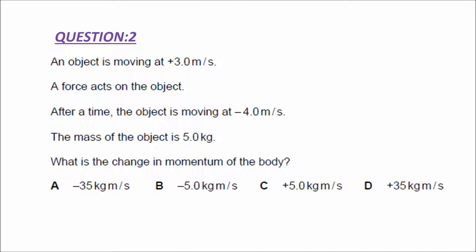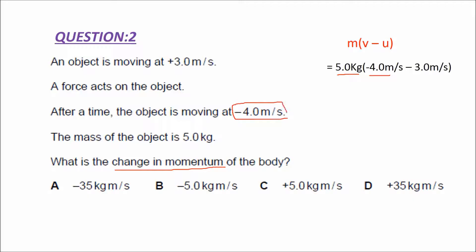Let us discuss the second question. An object is moving at plus 3.0 meter per second. A force acts on the object. After a time, the object is moving at minus 4.0 meter per second. The mass of the object is 5.0 kilogram. What is the change in momentum of the body? The change in momentum formula is mv minus mu. Substituting: 5.0 kilogram times minus 4.0 meter per second, minus 5.0 times 3.0 meter per second. We get minus 35 kilogram meter per second. So the answer is A.